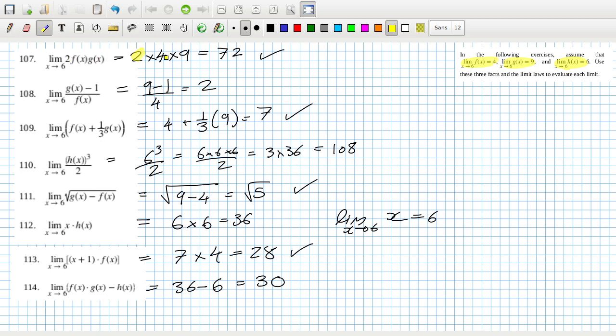...this one would just be two times four times nine. This quotient rule and also the difference rule, so again that's nine minus one over four. All pretty straightforward. This one here would be the...